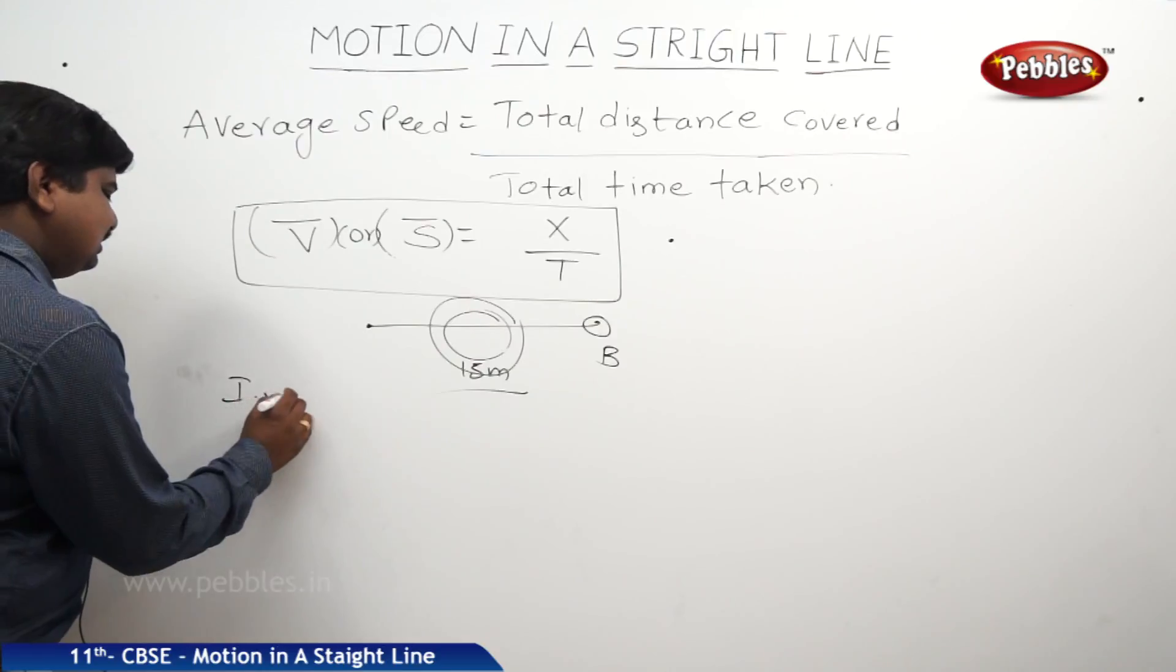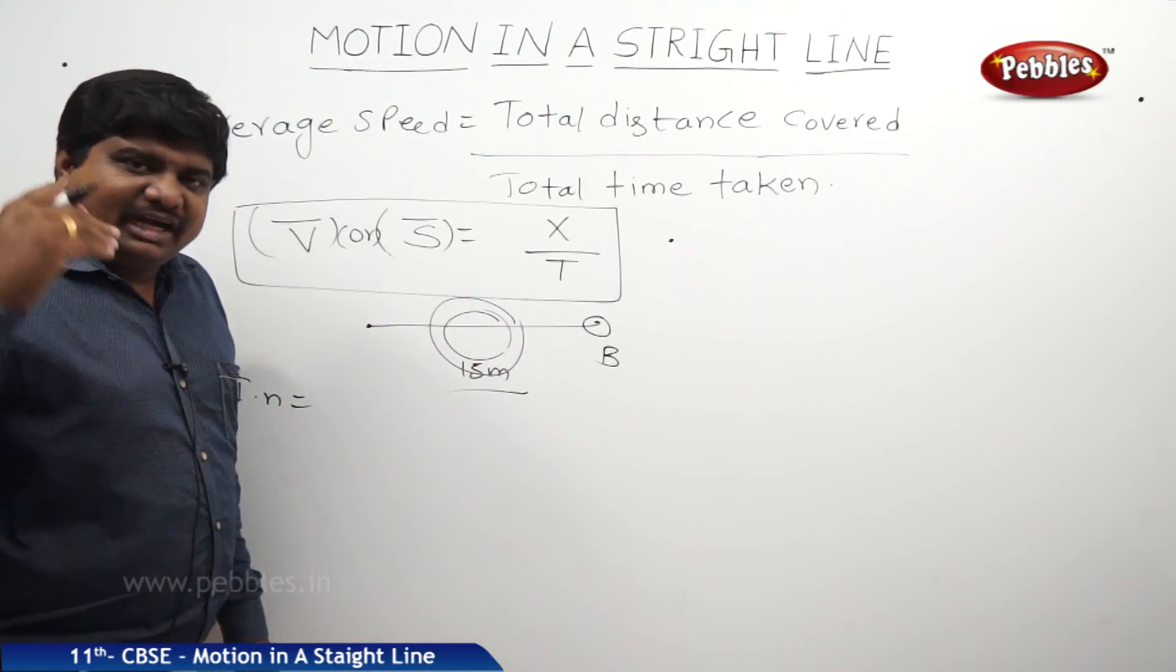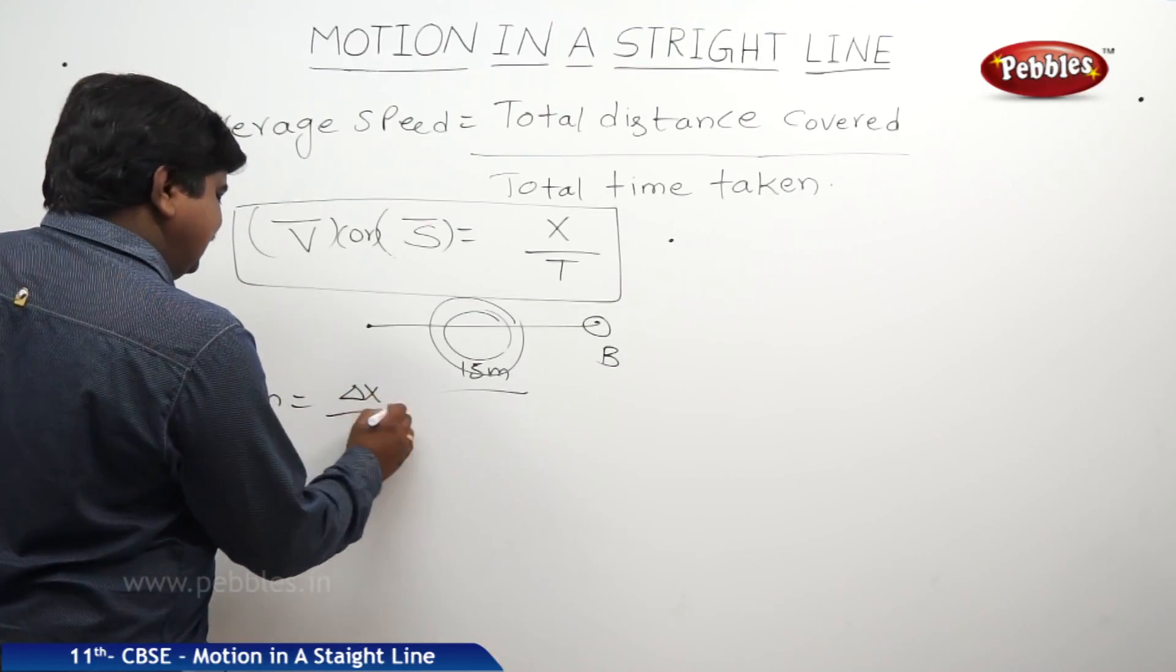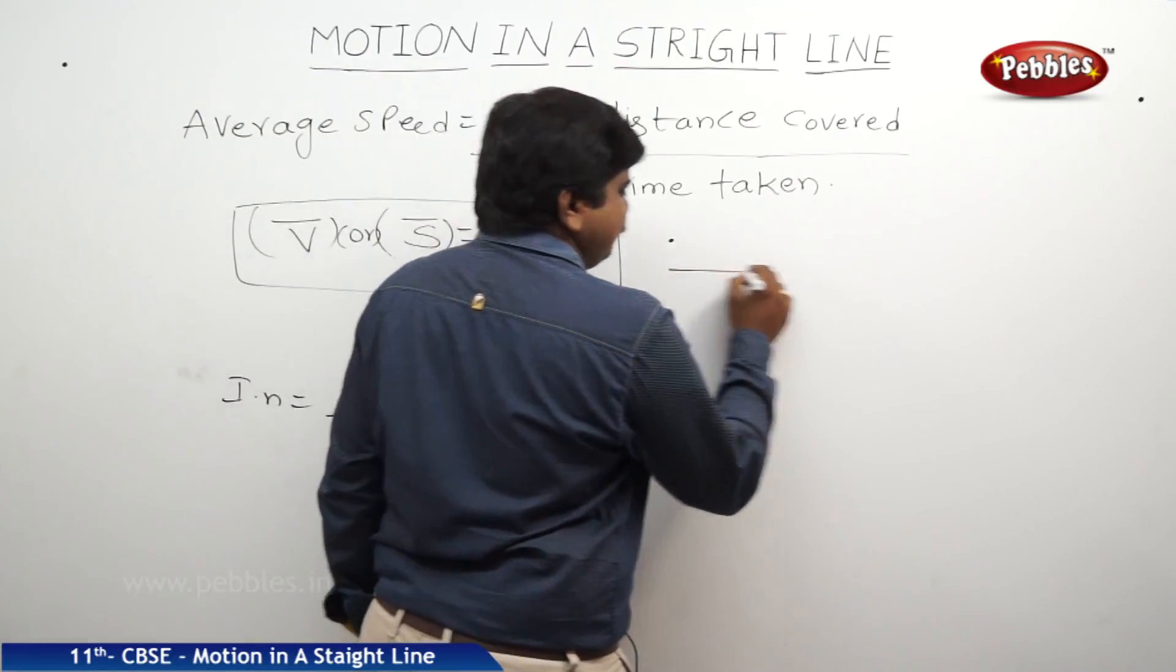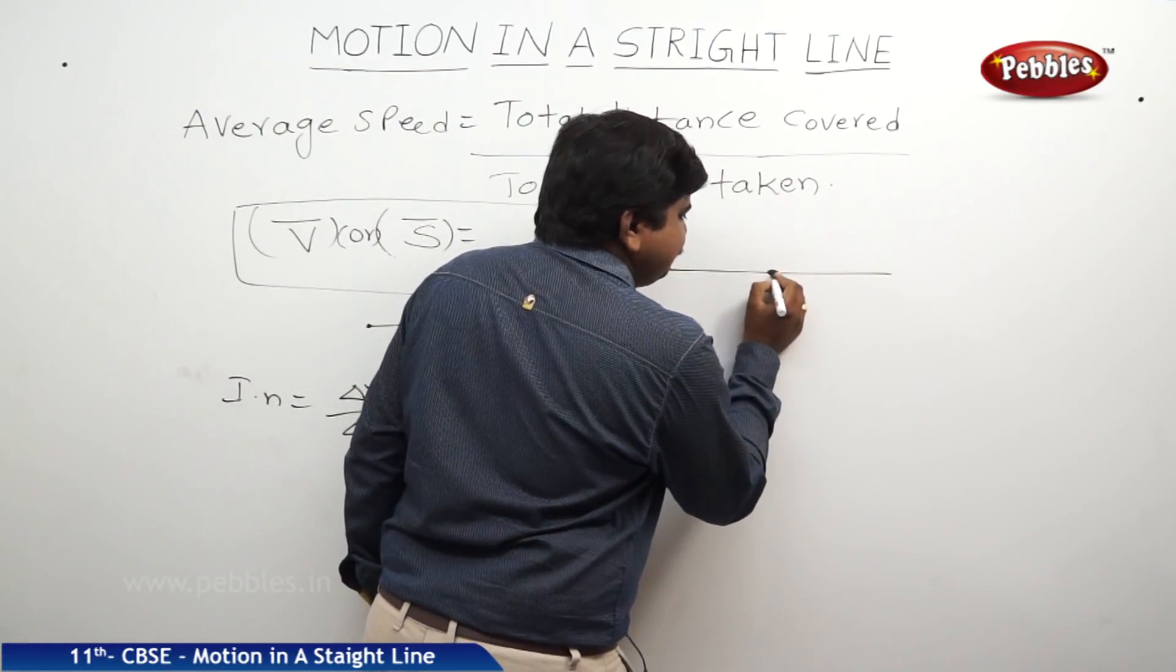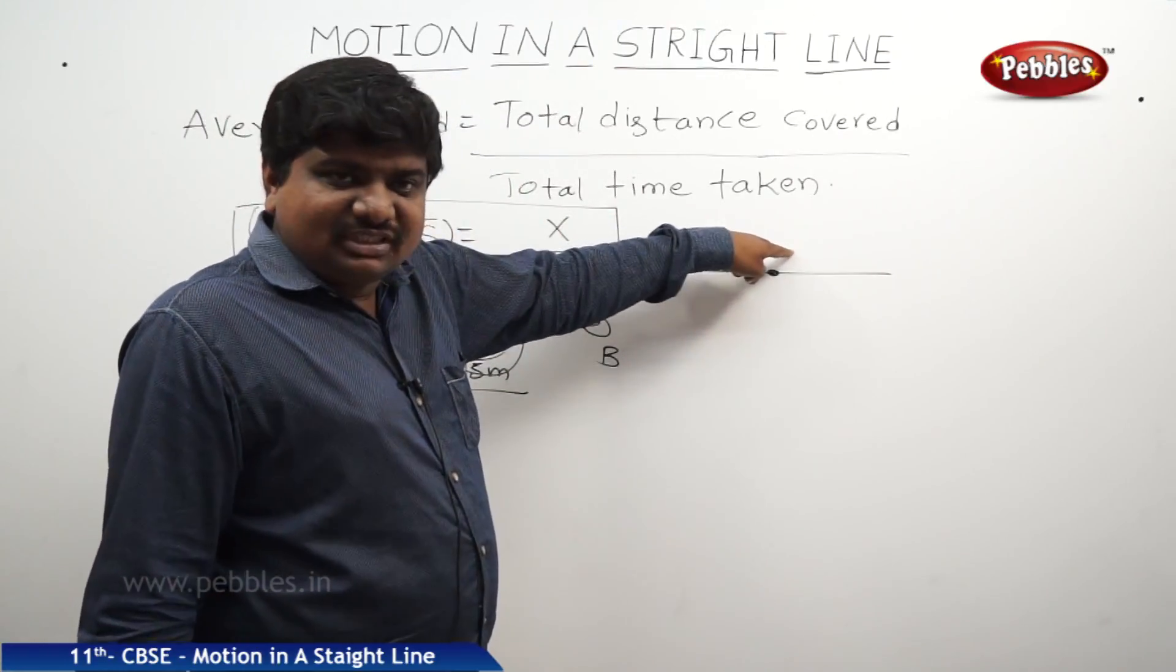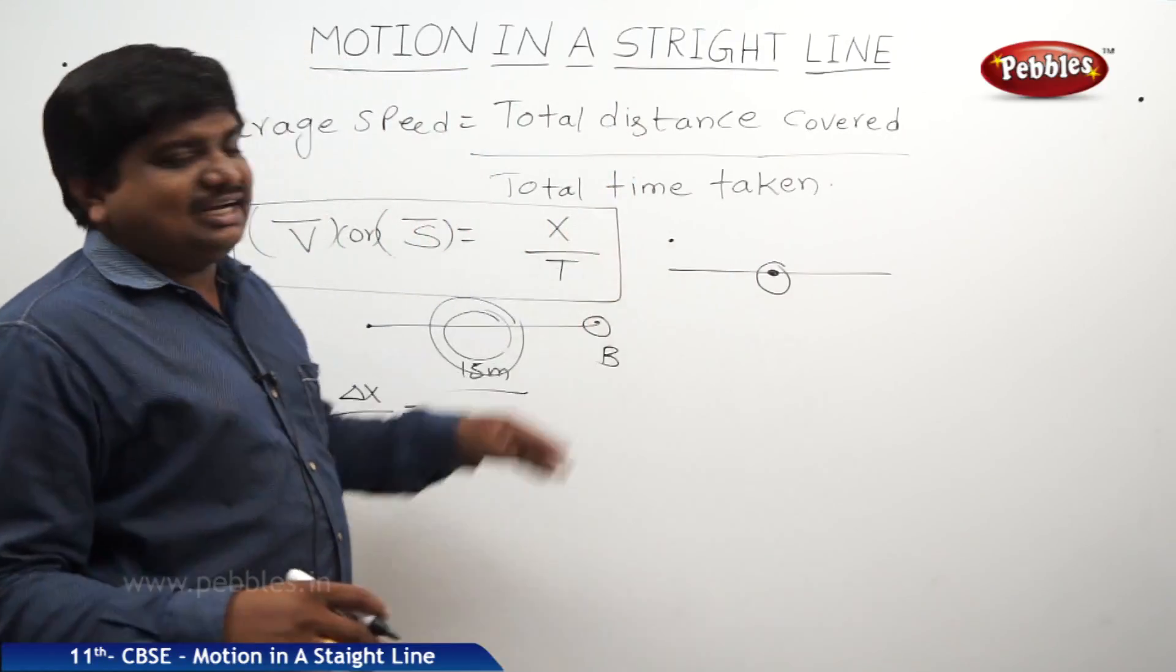Whatever the instantaneous speed, instantaneous speed means the speed of the body at a given particular time. So we can write this one as delta x by delta t. Means if a body is travelling from point to point, we will take a particular position in the middle. While the body is crossing that position, at that time, what is the speed of the body?